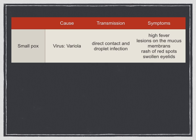Let's look at the cause, transmission and symptoms of smallpox, measles and tuberculosis. Smallpox is an acute, highly infectious disease caused by the variola virus. It is transmitted through direct contact and droplet infection. Symptoms include high fever, lesions on the mucous membrane in the mouth, a rash of red spots, and swollen eyelids.